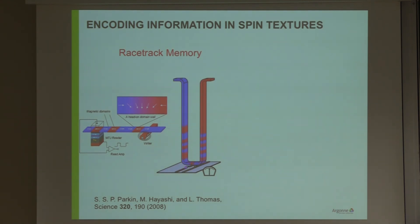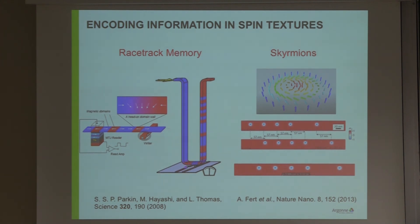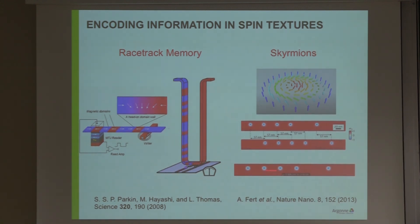Once this skyrmion was found to possibly be very mobile, it was suggested — starting with the idea Stuart discussed this morning about racetrack memory — that idea could be expanded and transferred to skyrmions, where a skyrmion could be a bit: a one or zero, and the lack of one would be the opposite logical quantity. Since we can move them, you would get the analog of domain-wall racetrack memory but with skyrmions. The major advantage is that pinning should be much less because you don't have edge effects, and these are topologically stable objects.